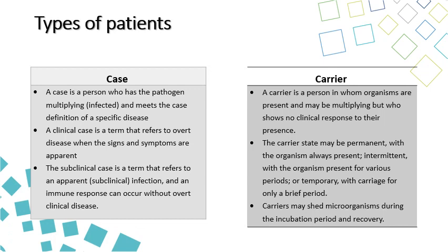There are two types of patients: cases and carriers. A case is defined as a person who has the pathogen multiplying and meets the case definition of the specific disease. Cases can be divided into clinical cases and subclinical cases. Clinical cases refer to overt disease when signs and symptoms are present. Subclinical cases refer to apparent infection where an immune response can occur without overt clinical disease.